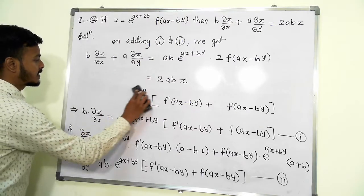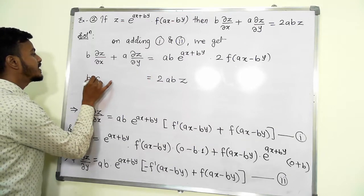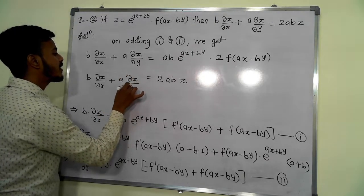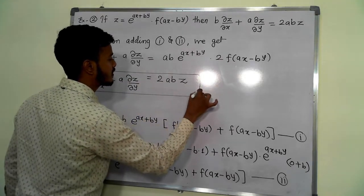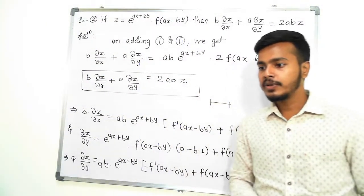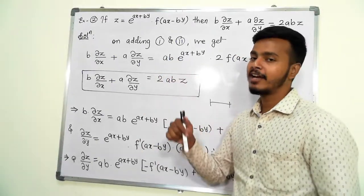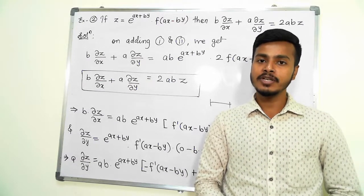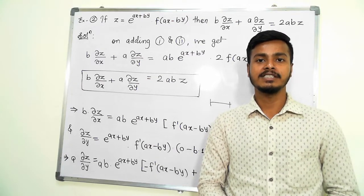Easy! It is good practice to write down the final answer nicely: b times ∂z/∂x plus a times ∂z/∂y equals 2abz. This is what we have in this learning video. I hope the problem is understandable. Thank you for watching. Enjoy learning and keep supporting. Thank you.